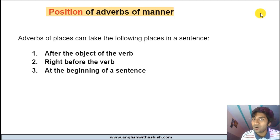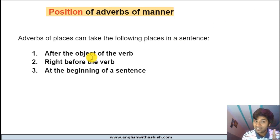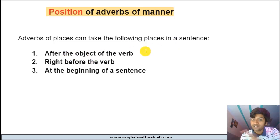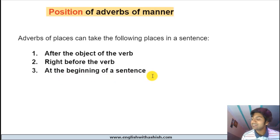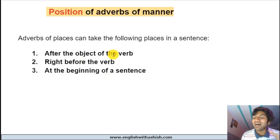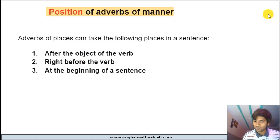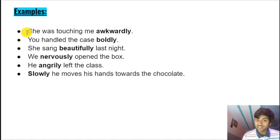Now, positions of adverbs of manner. An adverb of manner can take the following places in a sentence: number one, after the object of the verb; number two, right before the verb or after the subject; number three, at the beginning of a sentence. The most common position of an adverb of manner is after the object of the verb.